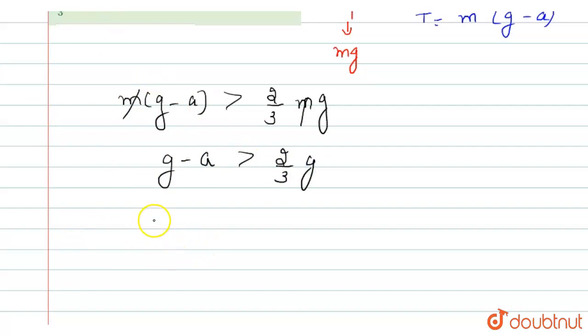Now, g minus a is greater than 2 by 3 into g. 2 by 3 into g is less than g minus a. From here, we can find the value of acceleration, which is less than g minus 2 by 3 into g.